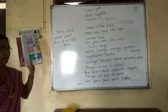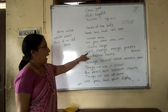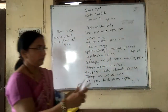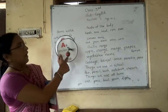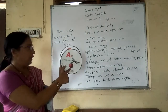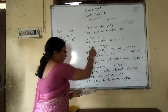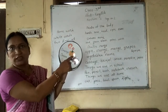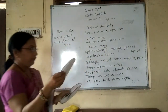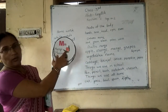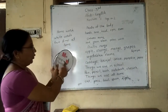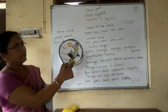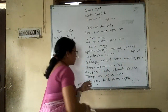I will read fruit names. Apple. This is an apple. Then orange. O for orange. Next, mango. M for mango. Next, grapes.